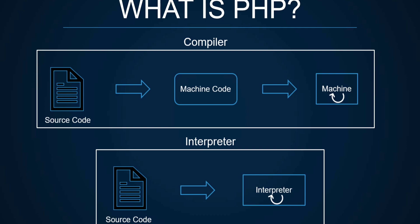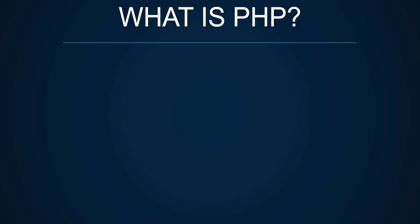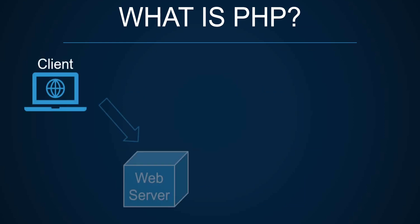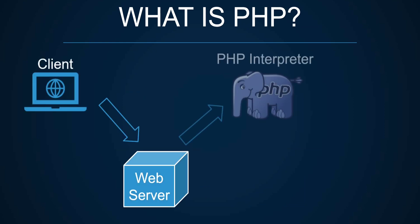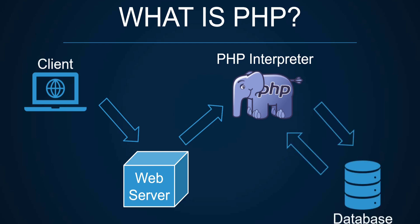Unlike JavaScript which runs on the client within the browser, PHP requires a server to run. This is a very simple representation of how PHP runs: the client or browser makes requests to the server, which then interprets and processes PHP. It can also do other things there, like connect to a database or third-party APIs, and finally it sends the response back.